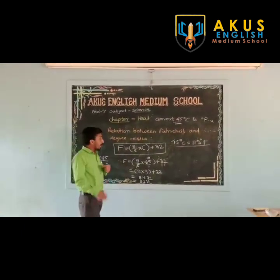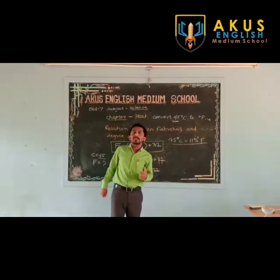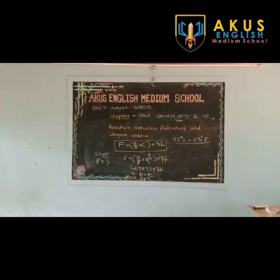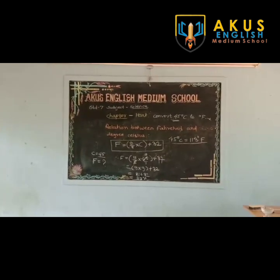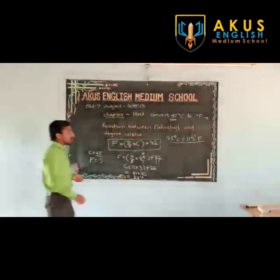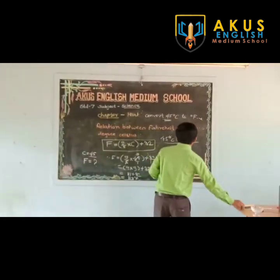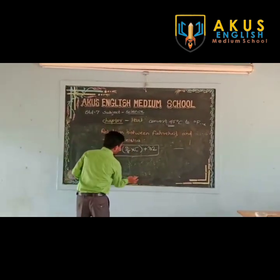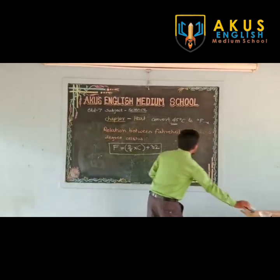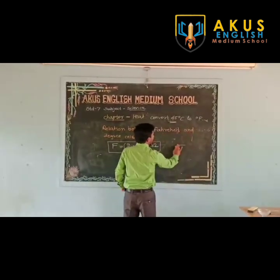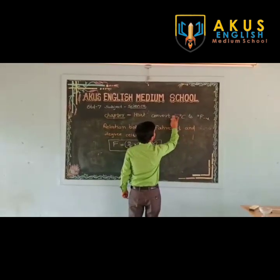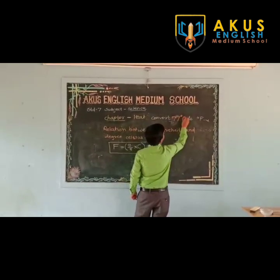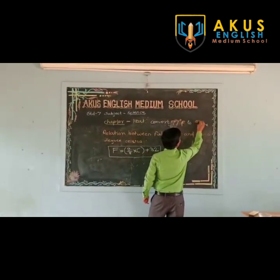Let us take one more example. We may have to convert temperature in Fahrenheit into degree Celsius. The question is: convert 77 degree Fahrenheit to degree Celsius.